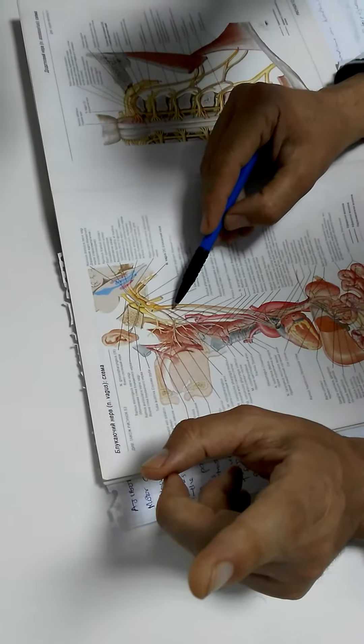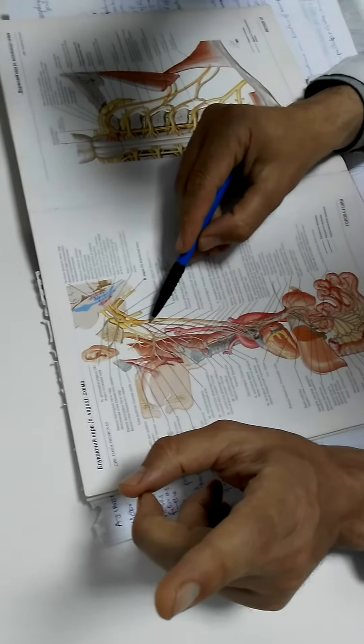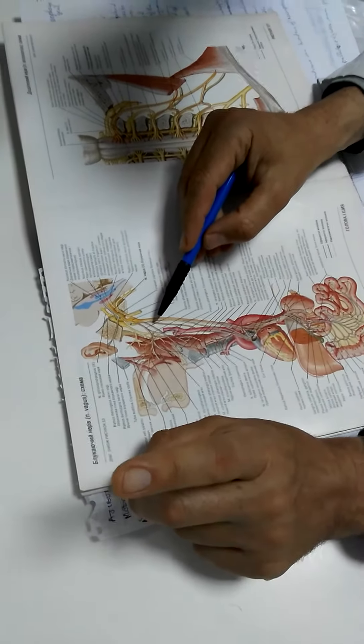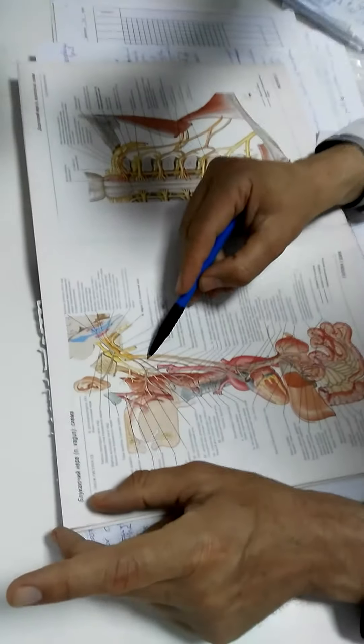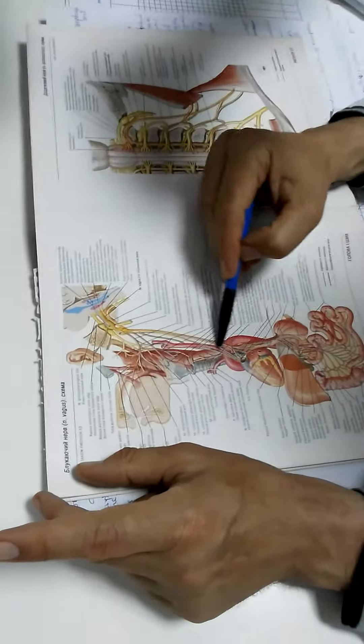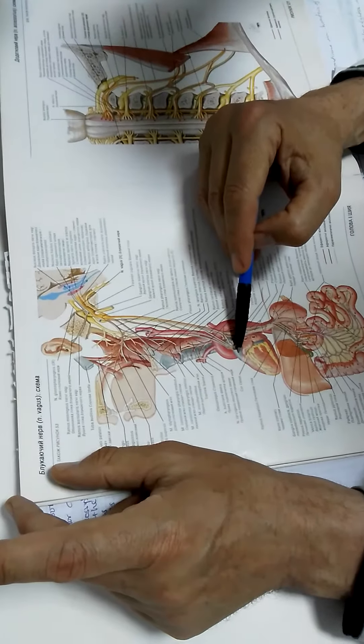Then three branches which go to the heart. Ramus cardiacus cervicalis superior, ramus cardiacus cervicalis medius, and ramus cardiacus cervicalis inferior.